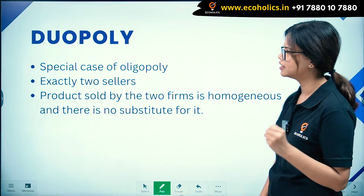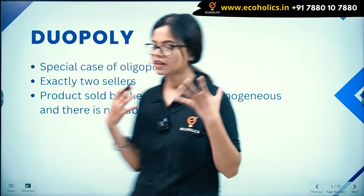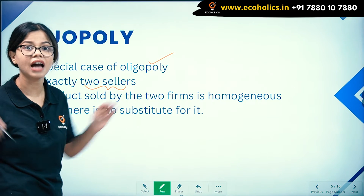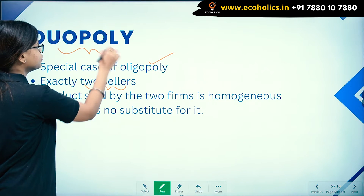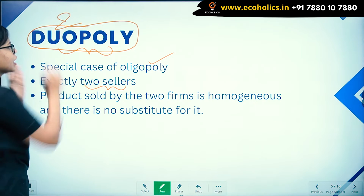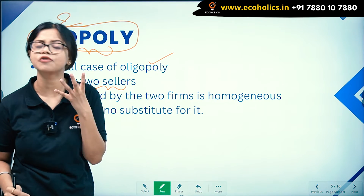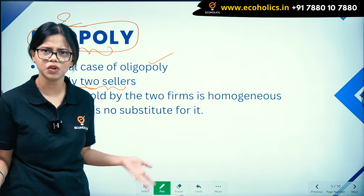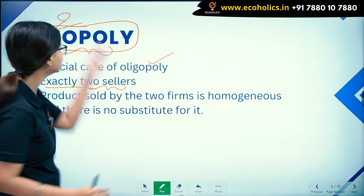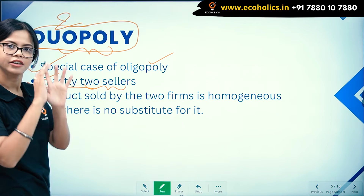Now let's understand duopoly. Duopoly is a special case of oligopoly where there are exactly two sellers. The prefix 'duo' means two. This is why in oligopoly we say 'few' means more than two — because if there are exactly two sellers, that market form is specifically called duopoly, a special case of oligopoly.